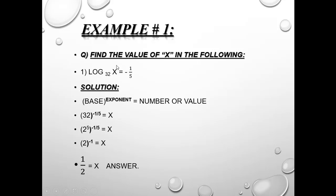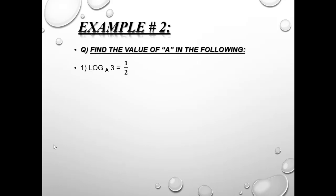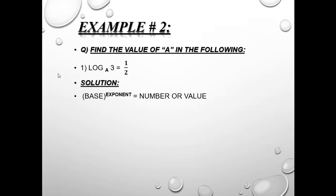The value we get is 1 over 2. Now in example number 2, the base is unknown. Find the value of a in the following: log to base a of 3 is equal to 1 over 2. This means if we apply a power of 1 over 2 to a, we get 3. Since 1 over 2 is the square root power, we need a number whose square root equals 3. That number is 9.